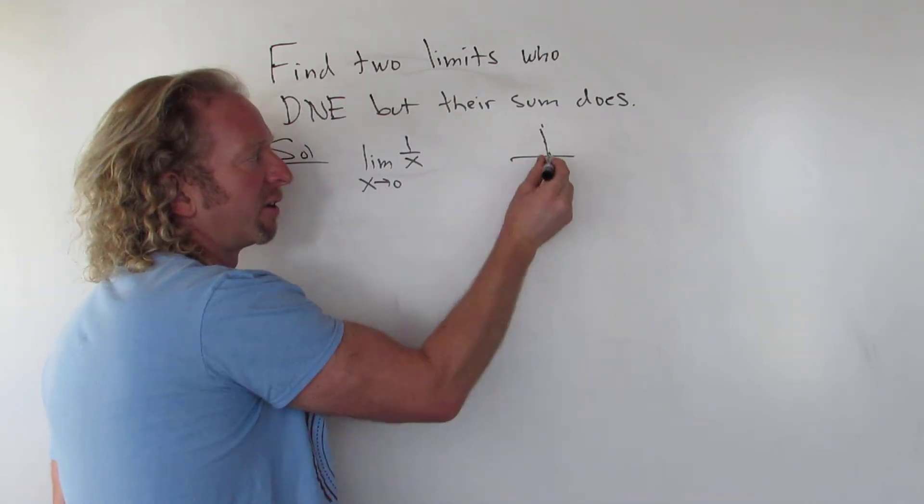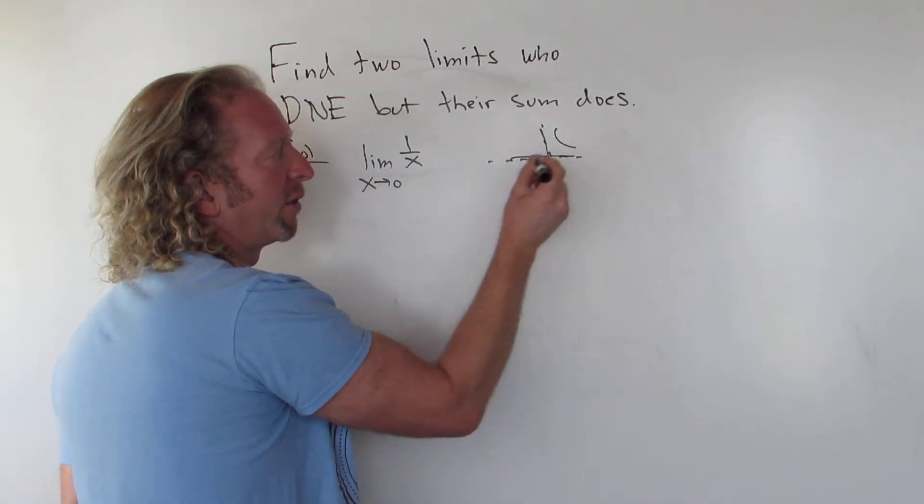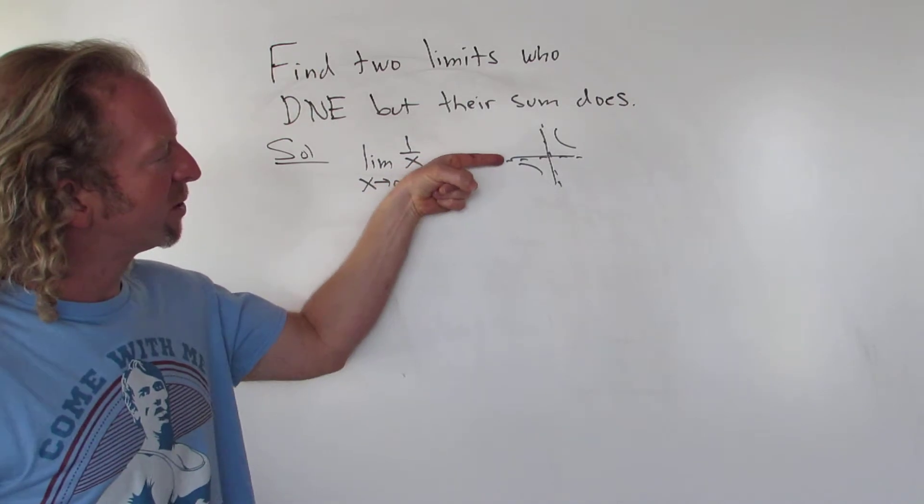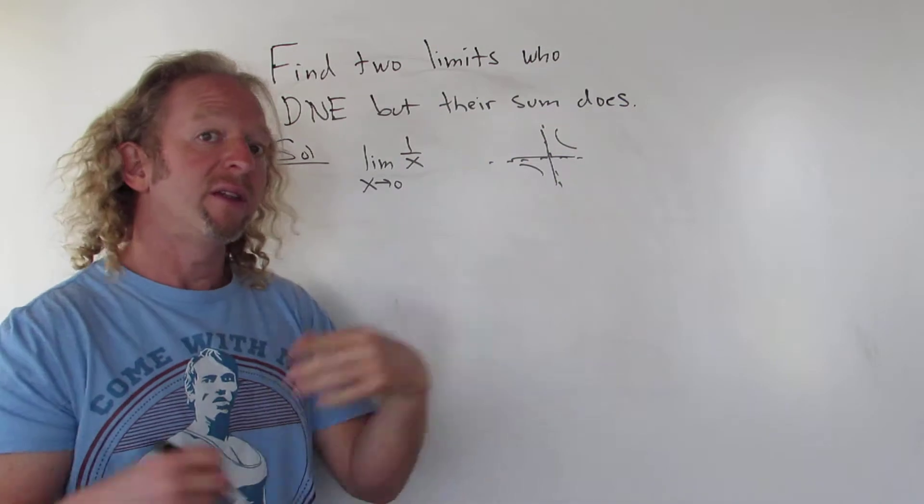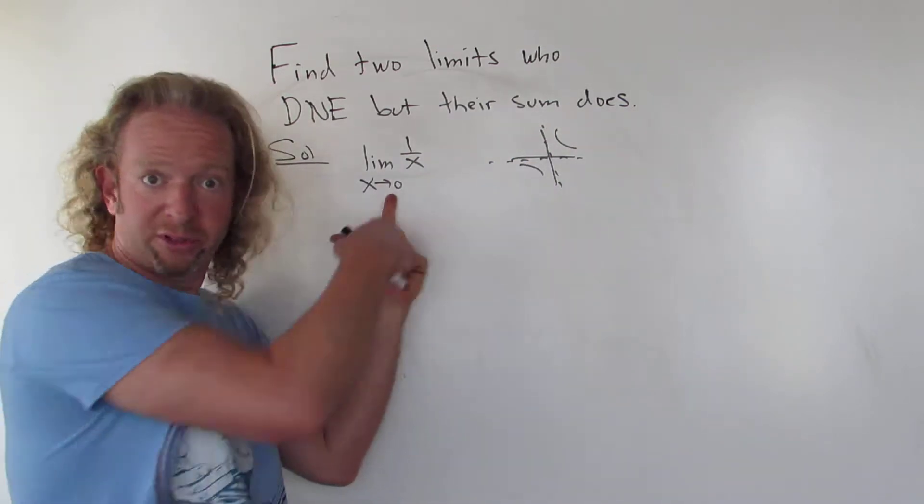Well, if you think about the graph of 1 over x, as x approaches 0 from the left, you get negative infinity. As x approaches 0 from the right, you get infinity. Therefore, as x approaches 0 from both the left and the right,